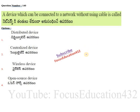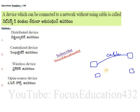Next question: a device which can be connected to a network without using a cable. We can connect computers with cables, but sometimes we can connect without a cable and still send or receive data. The name given to such a device is a wireless device.